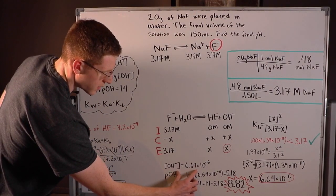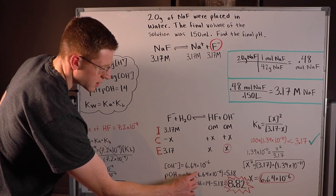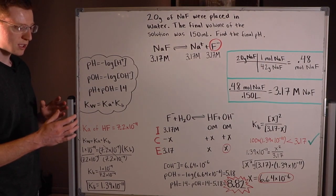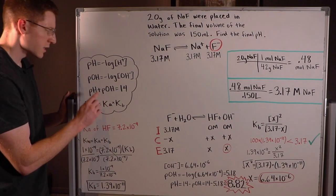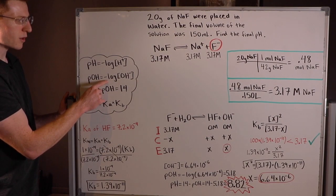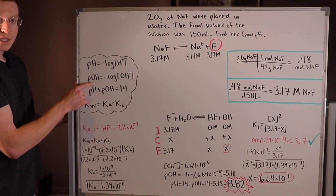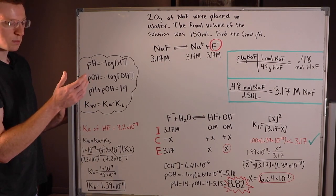So I've written here the concentration of OH-, or hydroxide, is 6.64 × 10⁻⁶, and I can actually use this to find the pH. I know that pOH is equal to the negative log of the OH- concentration, and using pOH I can get to pH.